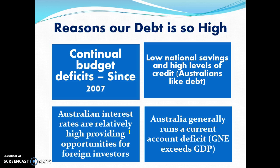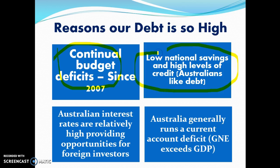Reasons our debt is so high in Australia: partly government debt is high because of budget deficits. We have a low level of national savings, so when we borrow money, banks have to borrow from overseas entities to fund our spending, increasing debt. Our interest rates are relatively high compared to other countries, so Australians prefer to borrow overseas and foreigners take advantage by lending to Australians. And as noted, we have large current account deficits which also contribute to our foreign debt.